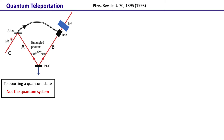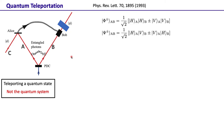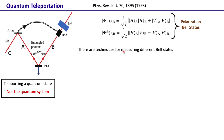In teleportation, Alice and Bob share an entangled state — they can share any of the four polarization Bell states, which are all maximally entangled, mutually orthogonal states. For example: phi-plus is |HH⟩ + |VV⟩, phi-minus is |HH⟩ − |VV⟩, psi-plus is |HV⟩ + |VH⟩, and psi-minus is |HV⟩ − |VH⟩. There are techniques for measuring which Bell state two particles are in — this is called Bell state measurement. We are going to use this Bell state measurement technique as part of the teleportation scheme.